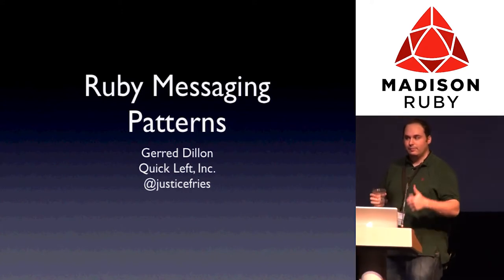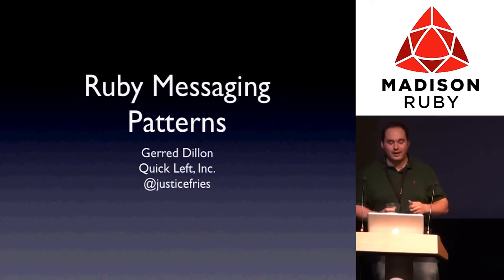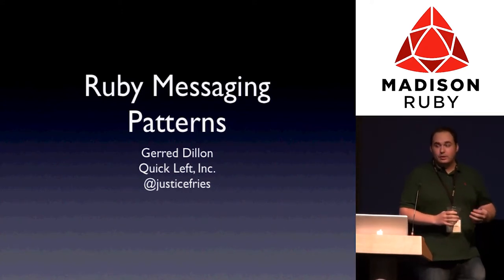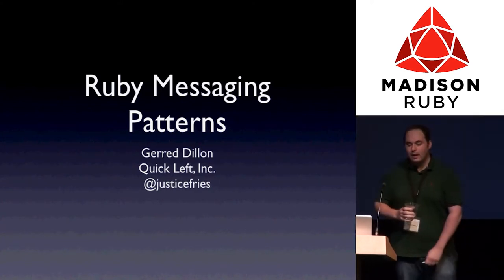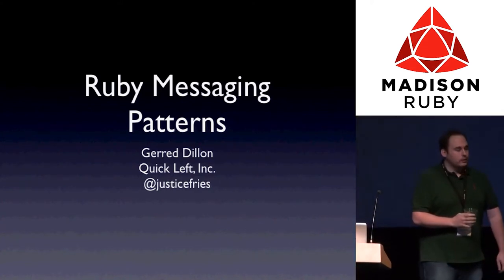Hello, everyone. Everyone have a good lunch? Good, bad, Mexican? So, yeah, as Jim said, my name is Jared Dillon. I am the chief architect with Quick Left. And I'm a Rubyist. I've been a Rubyist for a long time. And I do way too much work with AMQP.